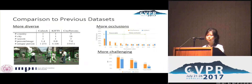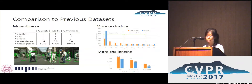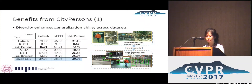Compared to previous datasets, CityPersons is more diverse, as the images were collected widely across different cities and seasons over the year. The density of persons and number of unique persons all exceed Caltech or KITTI by a large margin. CityPersons also contains more occlusions than Caltech. Therefore, CityPersons shows to be a more challenging test base for future research.